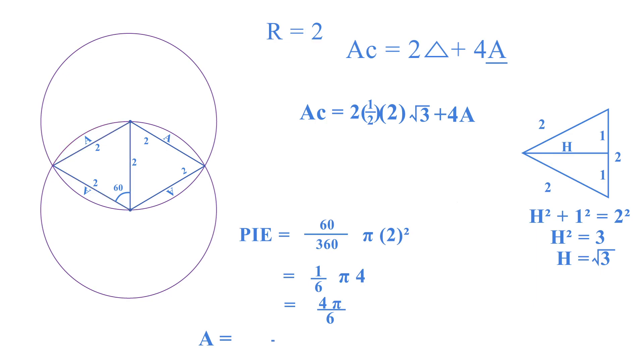So A is basically the pie which is 4π/6, subtract from it the area of the equilateral triangle which is 1/2 base, right here 2, times height which is √3. And therefore we've got 2π/3 in lowest terms minus √3. There you have it.